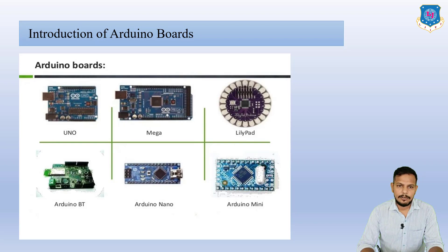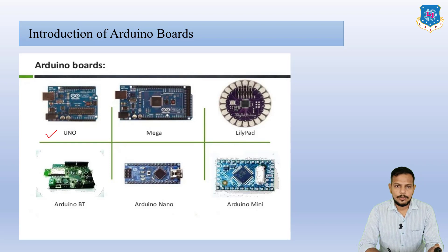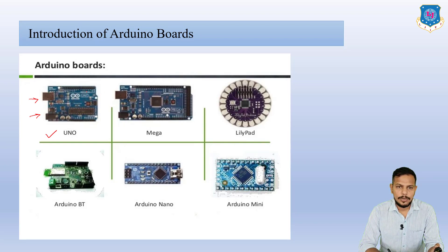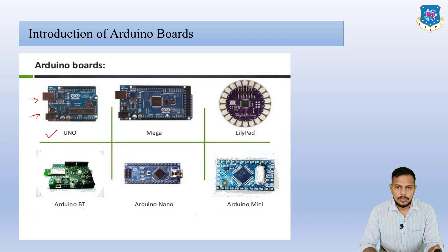There are various types of Arduino boards available in the market. The first one is known as Arduino Uno. Here you can see various types of pins available, one more connector on this side, and a power cable. Other boards include Arduino Mega, LilyPad, Arduino Mini, Arduino Nano, and Arduino BT.